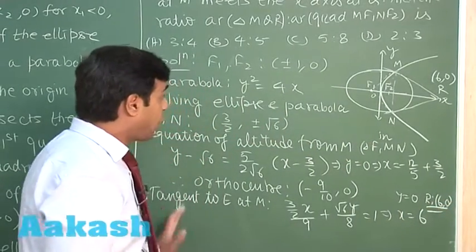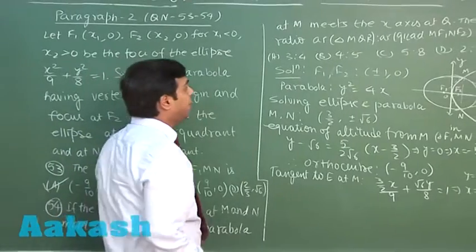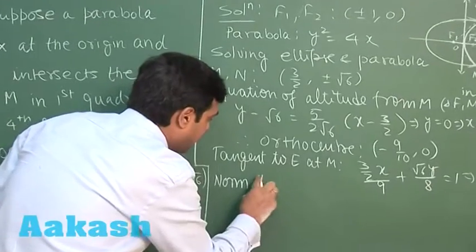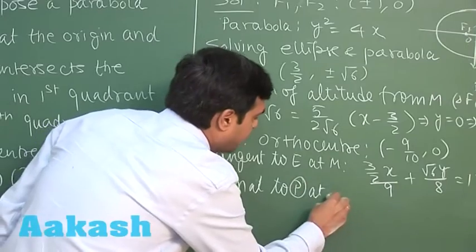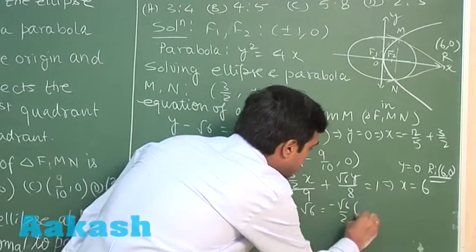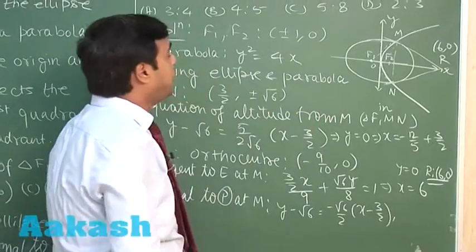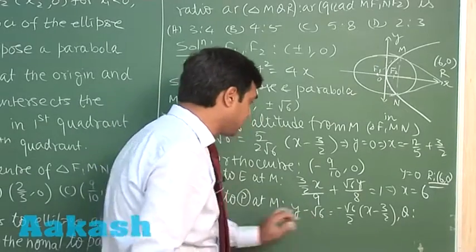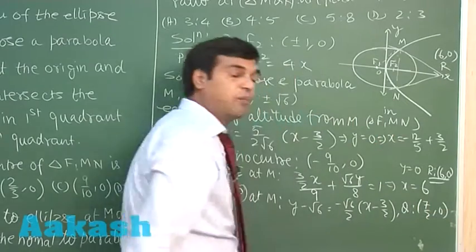Next, normal at point M to the parabola. Normal at M to the parabola can be written as y minus root 6 equals minus root 6 by 2, x minus 3 by 2. From here we can get the point Q as simply substitute y equals 0, that gives you minus root 6 cancelled, 2 plus 3 by 2, giving me 7 by 2 comma 0 as the point for Q.